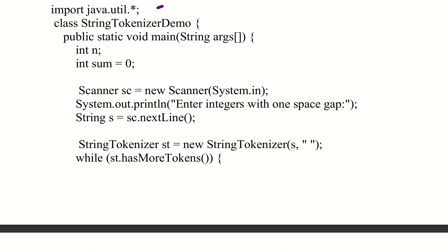Now let's look at the program. First, import java.util.*. Then declare the class StringTokenizer. Inside the main method — public static void main(String[] args) — we are going to read a line of integers. We declare integer n and integer sum.